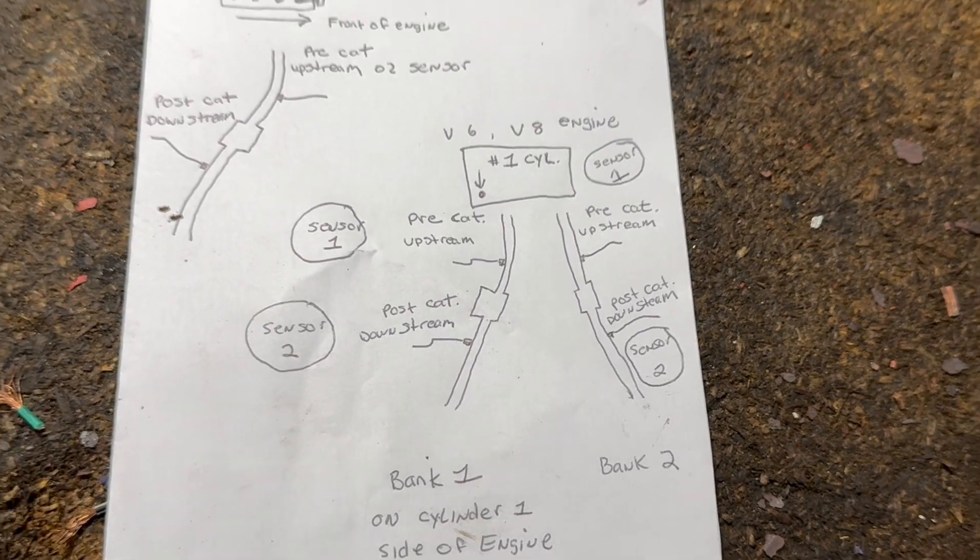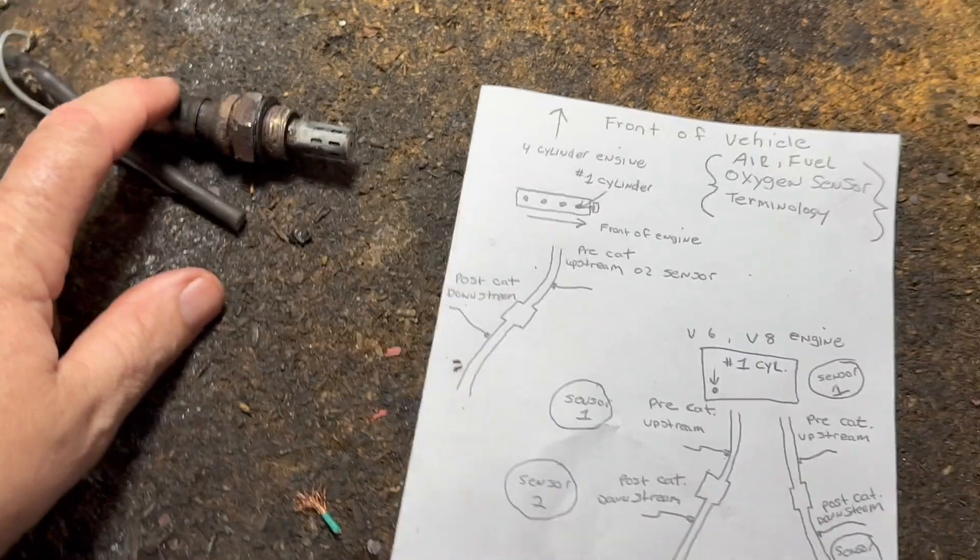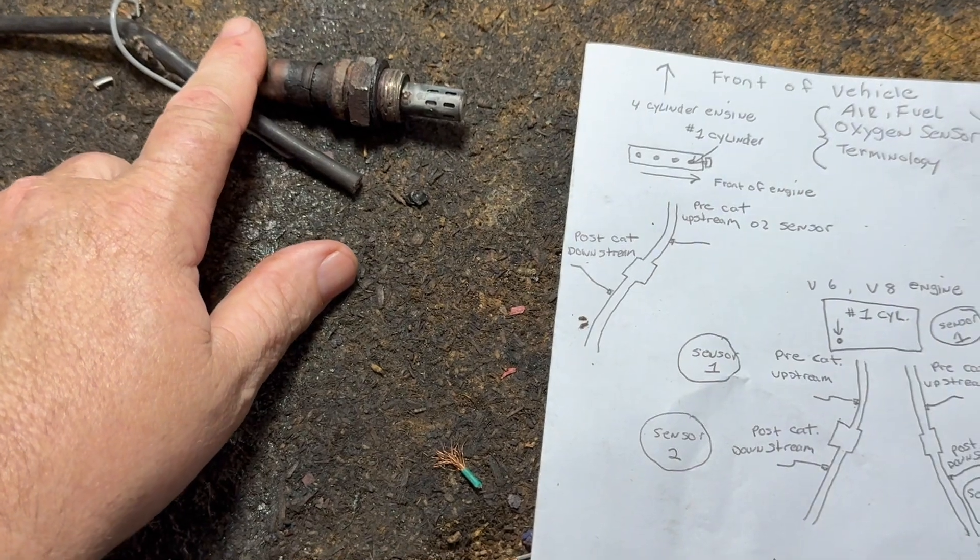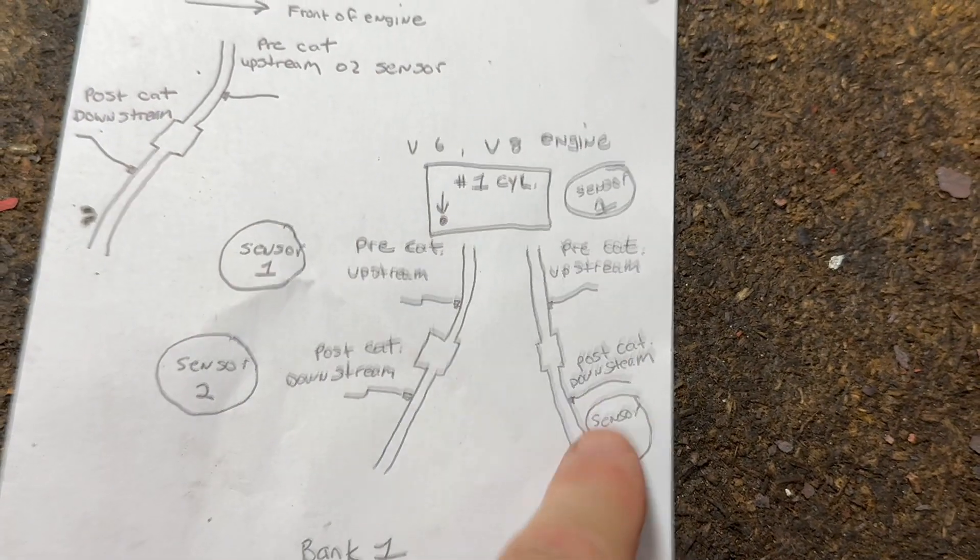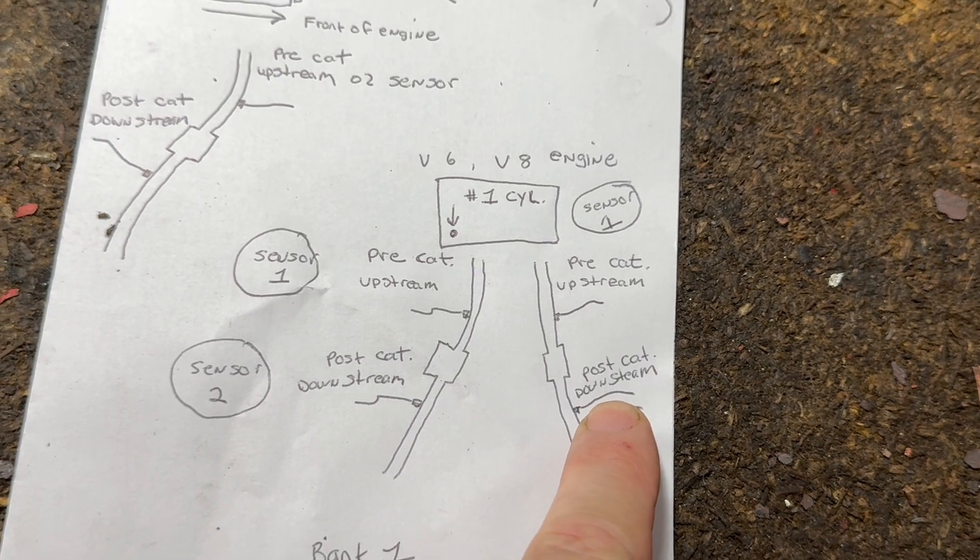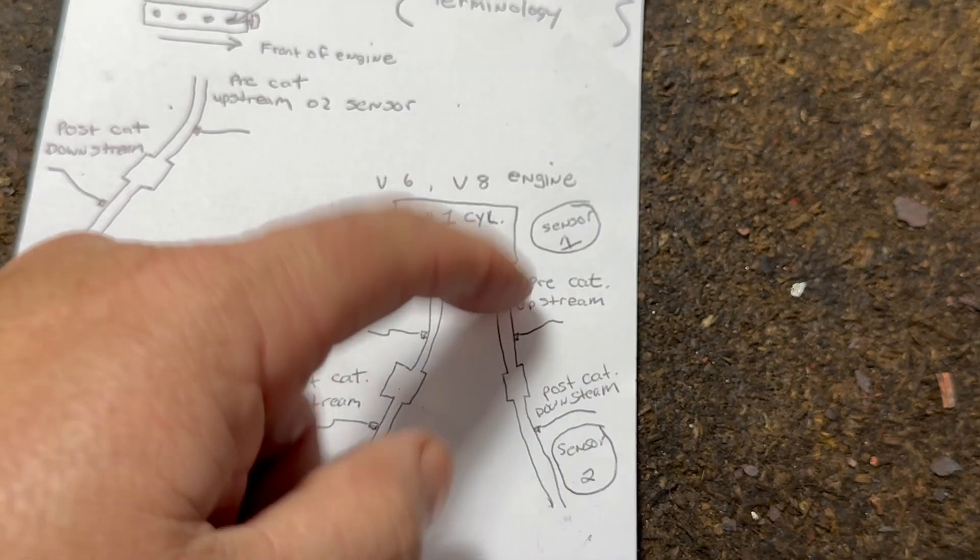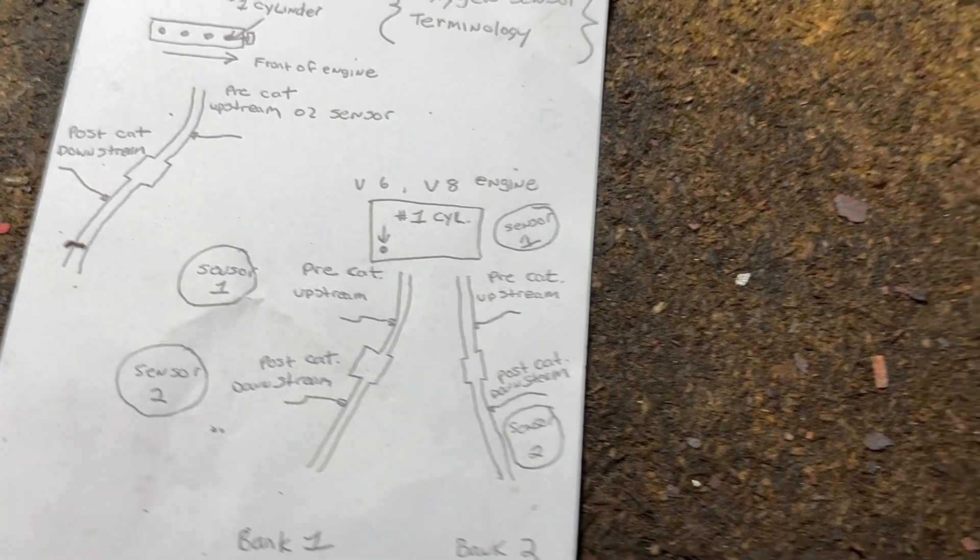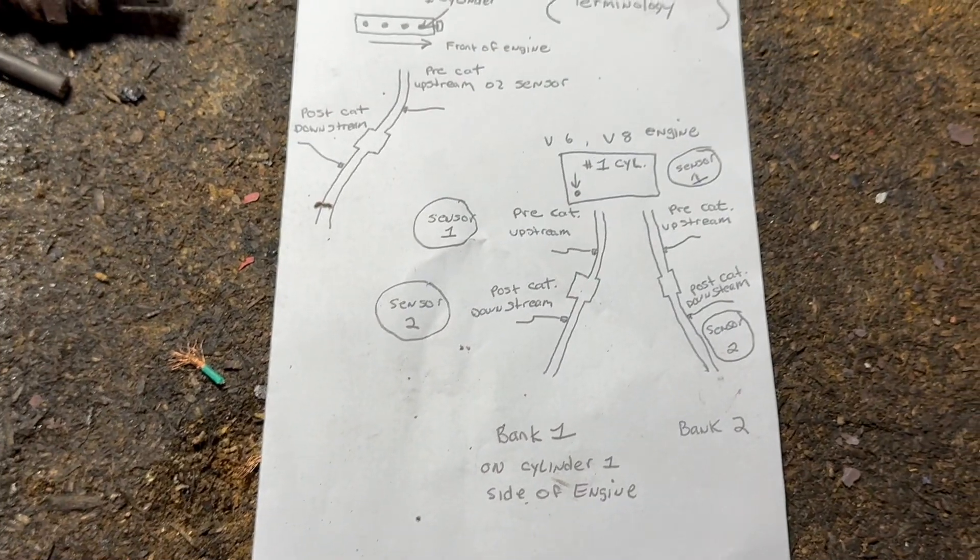Okay, which what are they talking about? So that's how you diagnose. What this one came out of, bank two sensor two. So that came out of this one. Okay, because we know that's number one. That's bank one. This is bank two sensor two, post cat, downstream sensor. And it's good when you're ordering sensors too to know what you're ordering. All right.